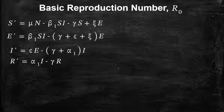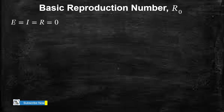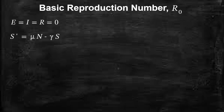In order to compute the basic reproduction number we need to first determine the disease-free equilibrium. At a disease-free equilibrium we assume that E, I, and R are all zero. Setting E, I, and R to zero, we are going to end up with this equation, and then making S the subject,